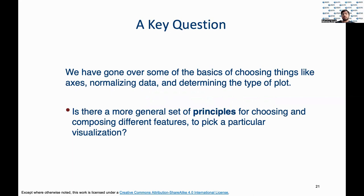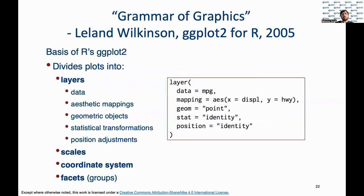We talked about the importance of selecting the right axis and applying proper scaling to determine plot types. But what if there were a generalized set of principles that aided the selection of visualizations? ggplot, a very renowned data visualization package of the R programming language, divides plots into four distinct steps: layers, which hold the data being plotted; the type of plot; any statistical transformations; and positions of the visualization. Then there are scales that determine scaling transformations and the coordinate system for defining axes. And finally, there are facets that determine grouping.